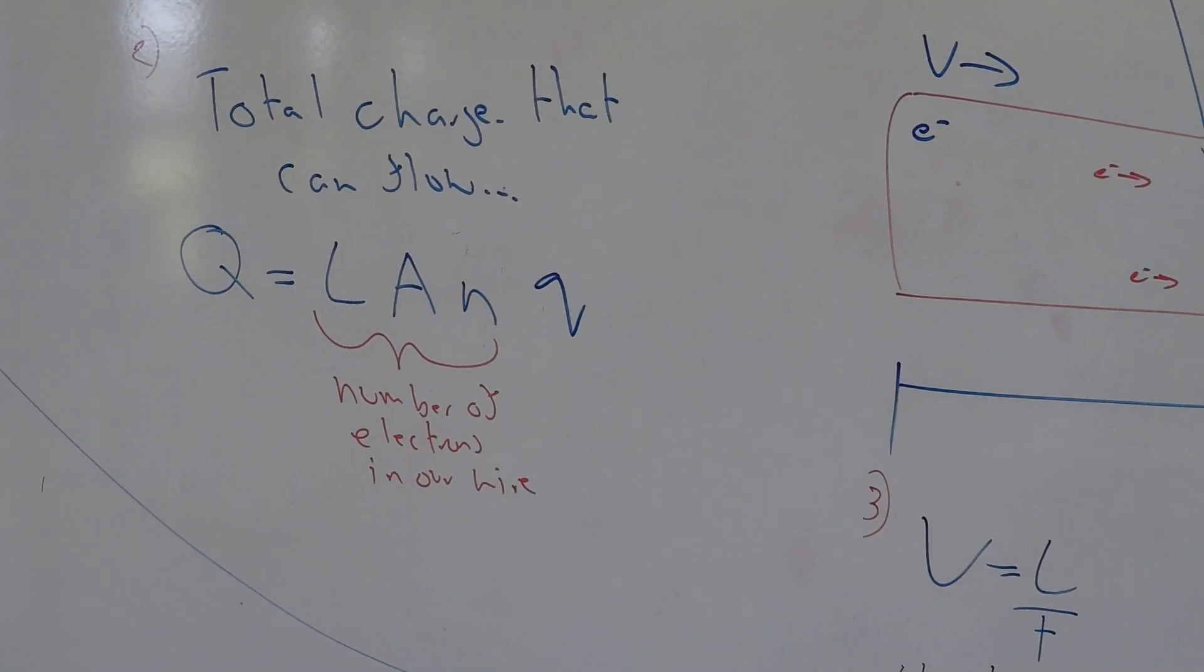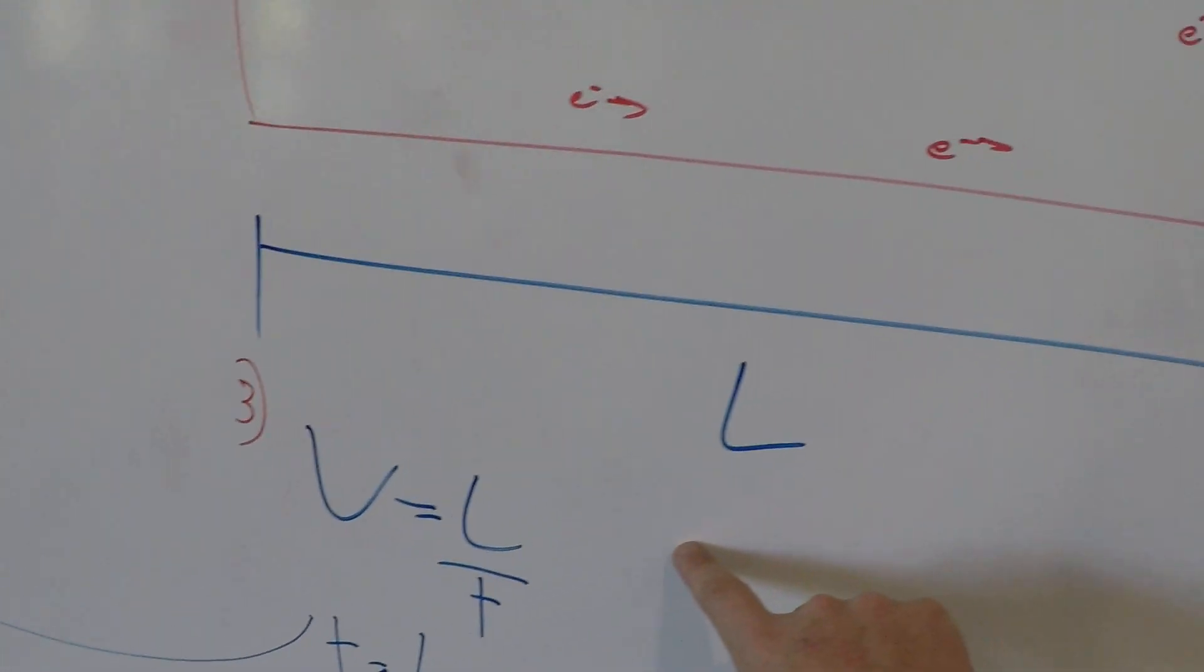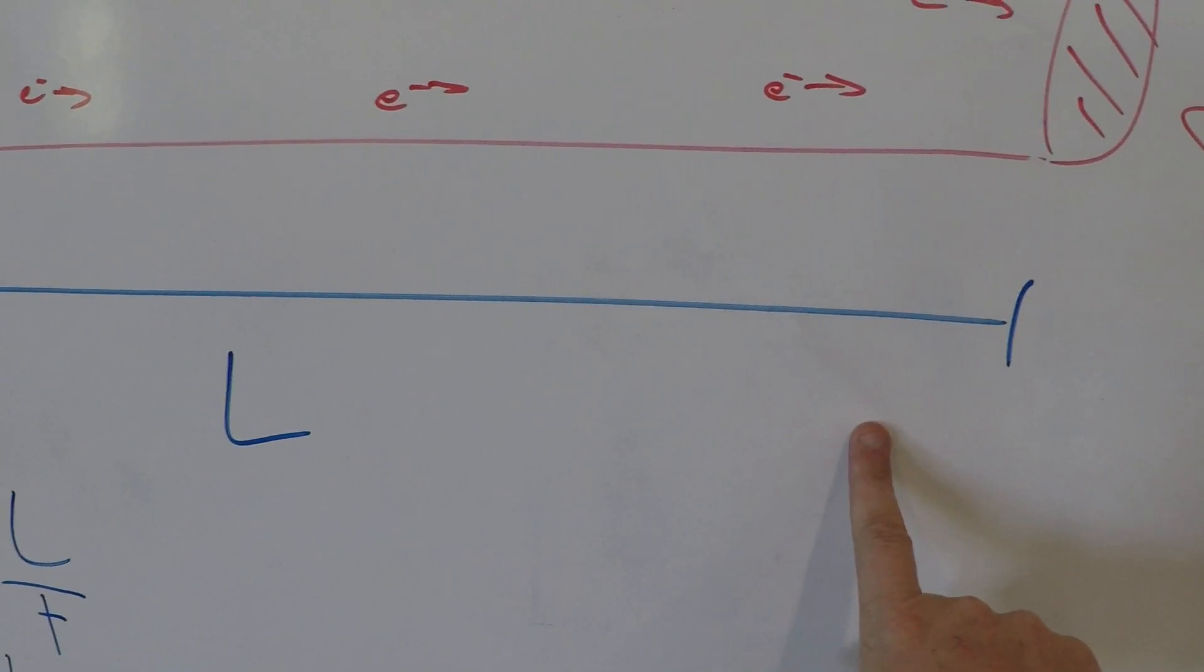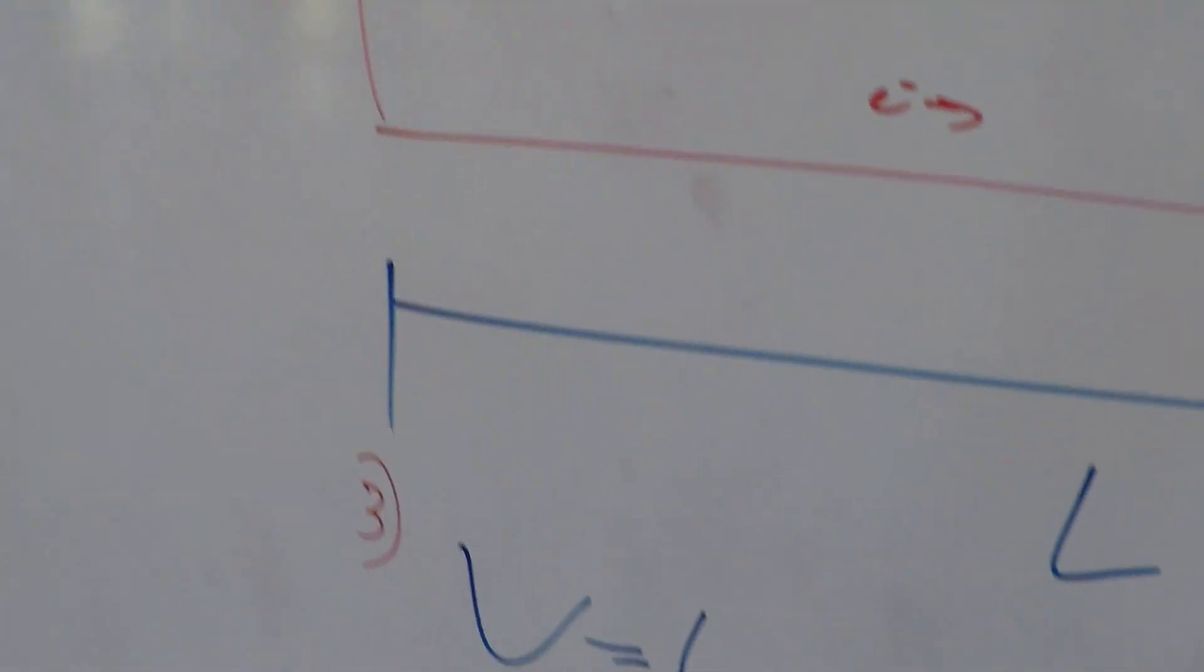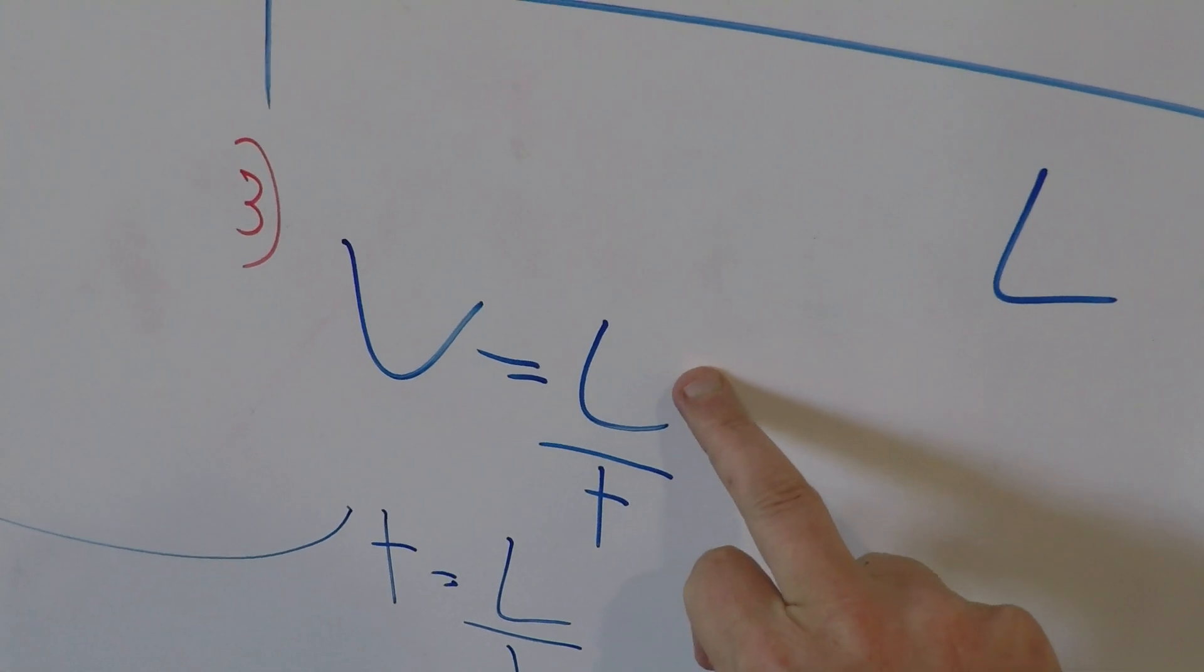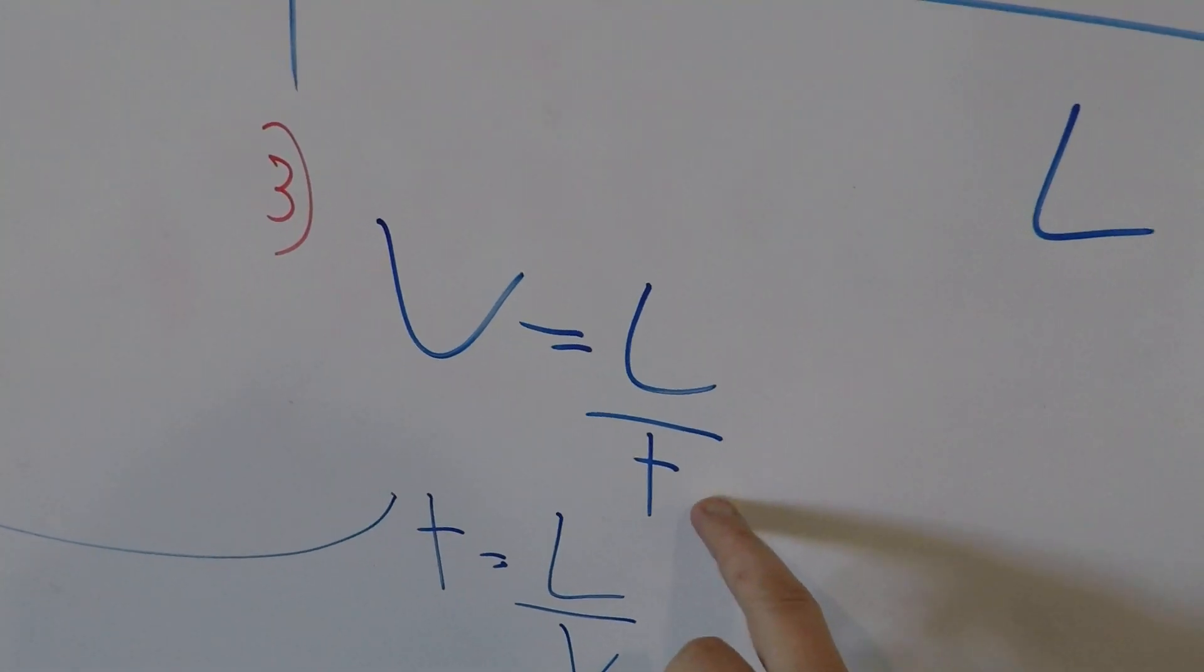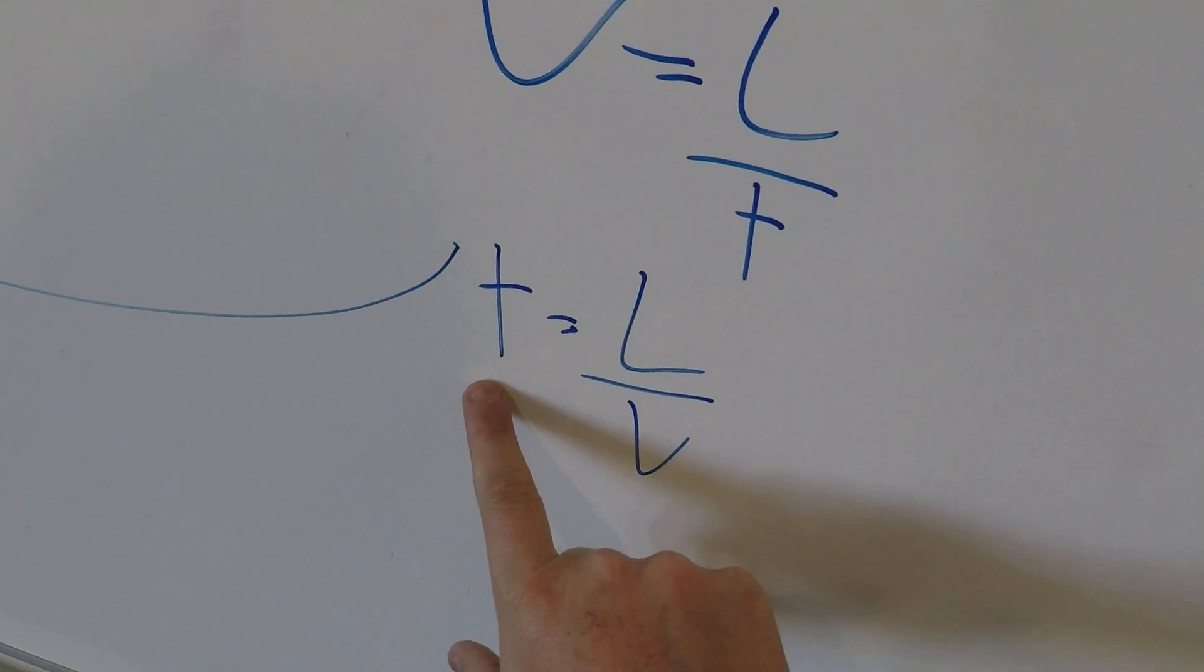So that's the charge dealt with. The second part, well, our wire has got a length of L, and our electrons have got a velocity V, so velocity is equal to the length, or the distance, divided by the time taken, and we're going to rearrange this formula to make T the subject, so T equals L over V.